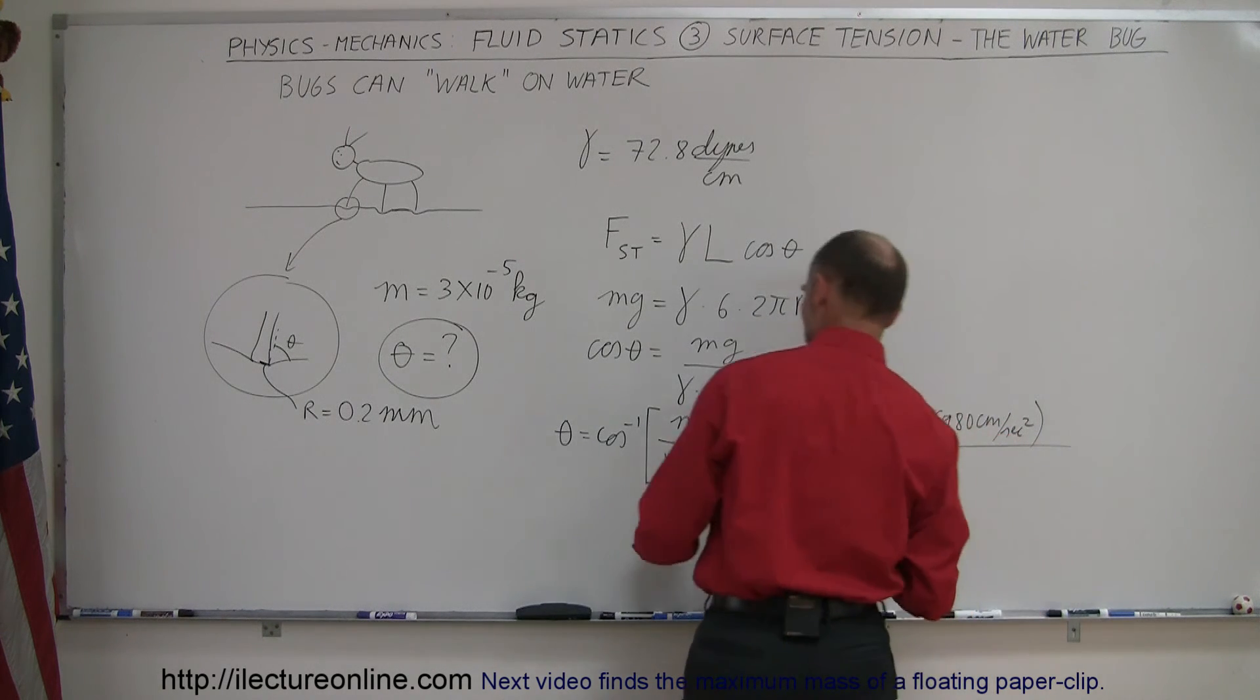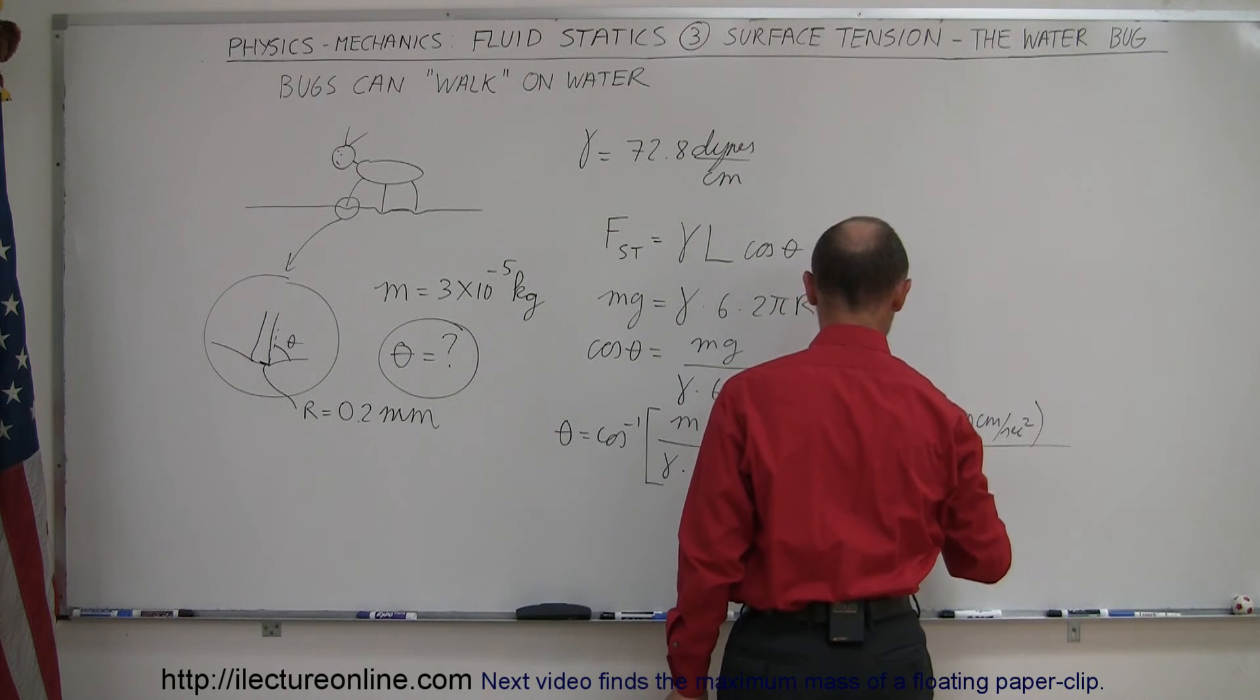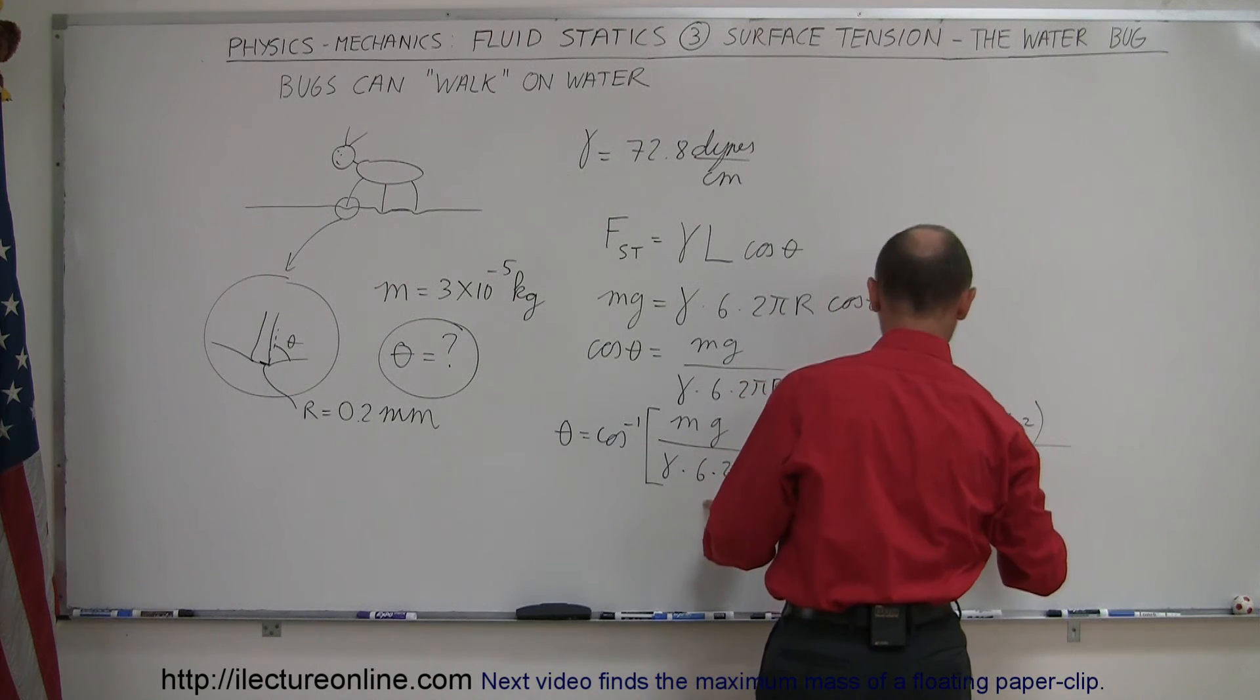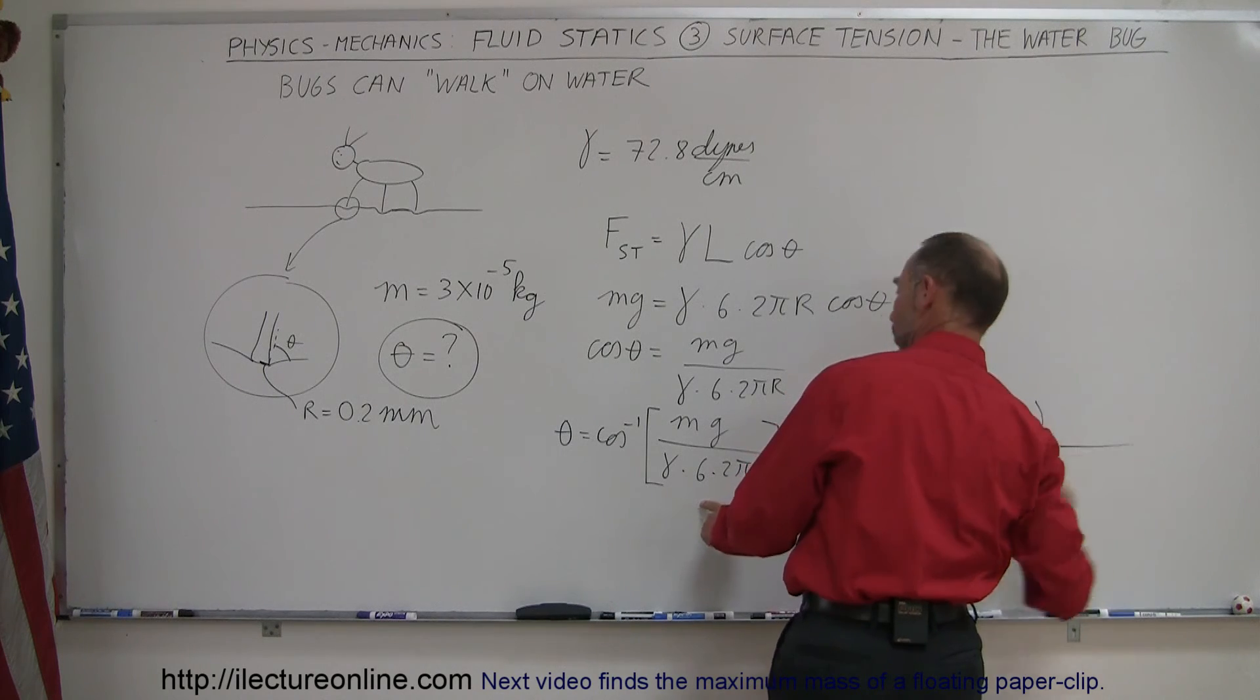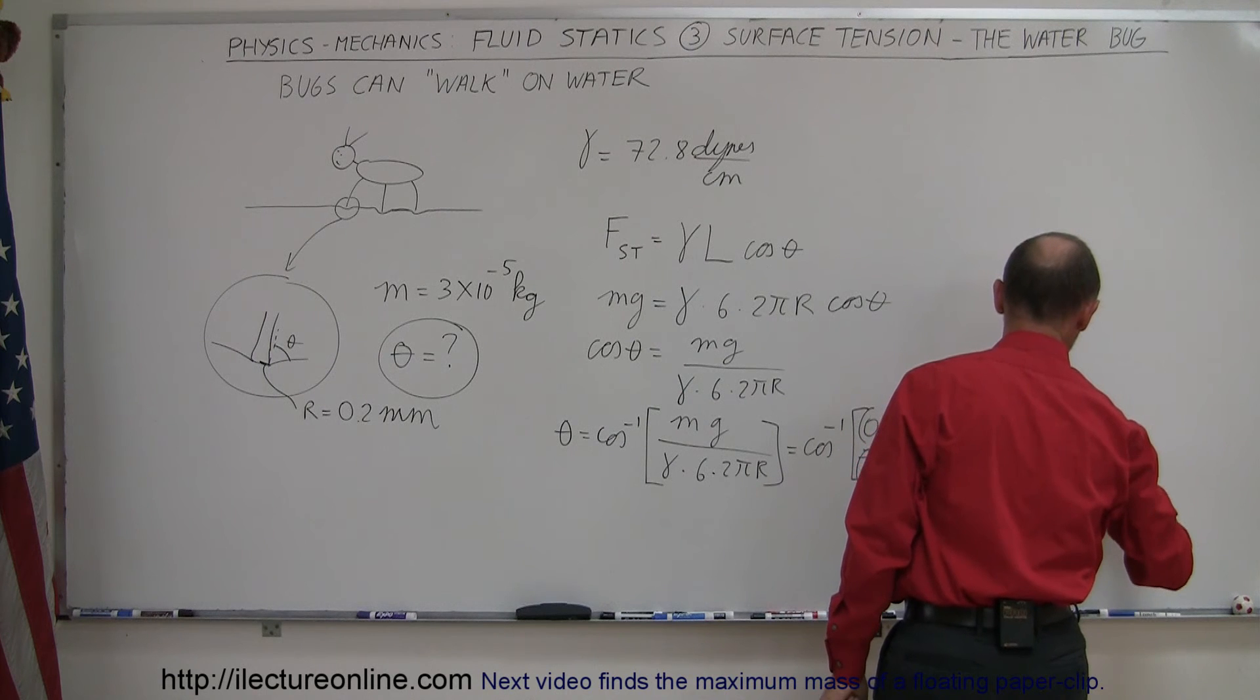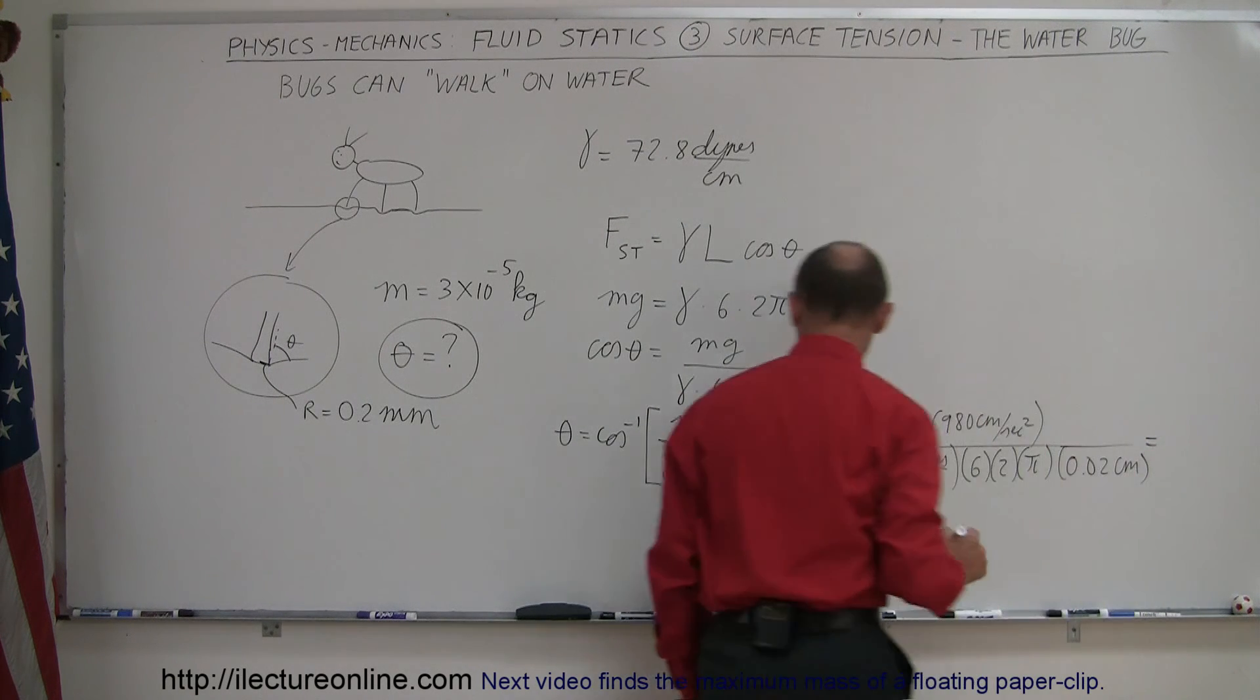Divide the whole thing by the coefficient. That would be 72.8 dynes per centimeter. Multiply that times 6 times 2 times pi and times the radius converted to centimeters which would be 0.02 centimeters. So we have this whole thing now in the CGS units.